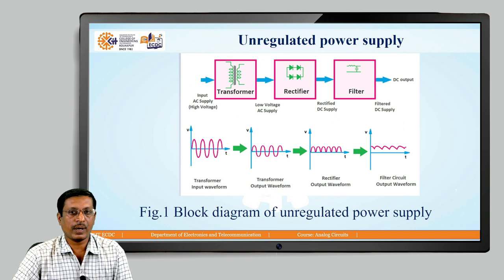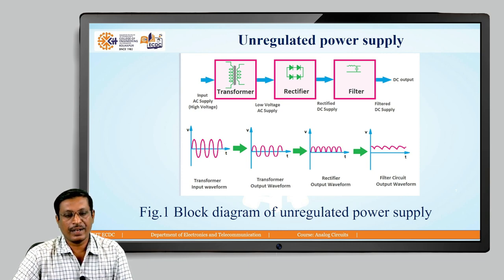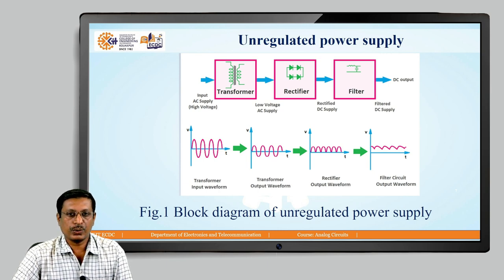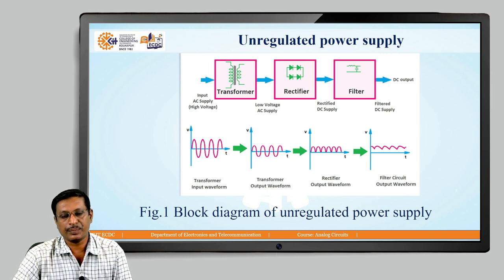Here is the block diagram of an unregulated power supply. It includes a transformer used for converting higher voltage into a lower voltage, commonly known as a step-down transformer. The next block is the rectifier that converts AC into DC, followed by a filter circuit that minimizes the ripple. Even after using a filter, some AC content is still present in the output of an unregulated power supply.